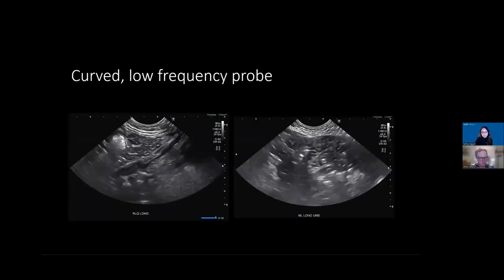We're used to using the curved probe for the abdomen because of solid organs, but for bowel it's completely different. You're not interested in the deeper structures. There are some cases where you want to look for abscesses with curved probes, but most of the time with bowel, you're interested in the bowel walls. You don't need to capture everything — you just need a superficial part of the bowel, but image that part well.